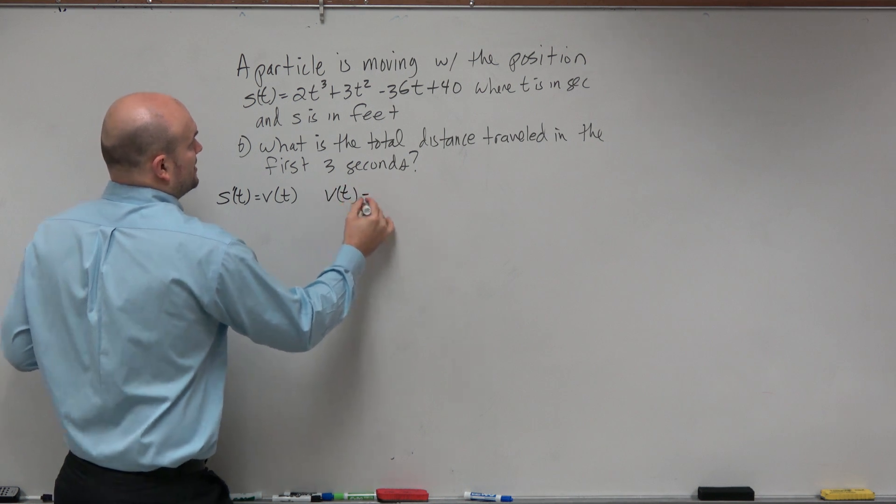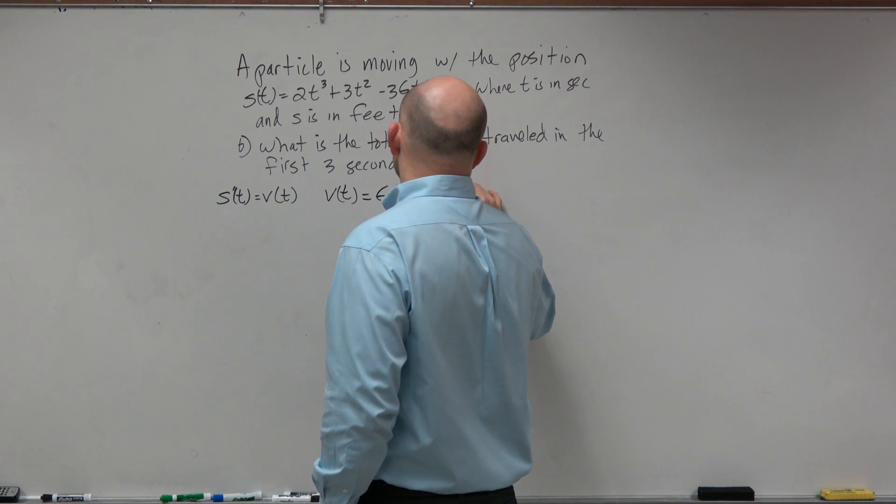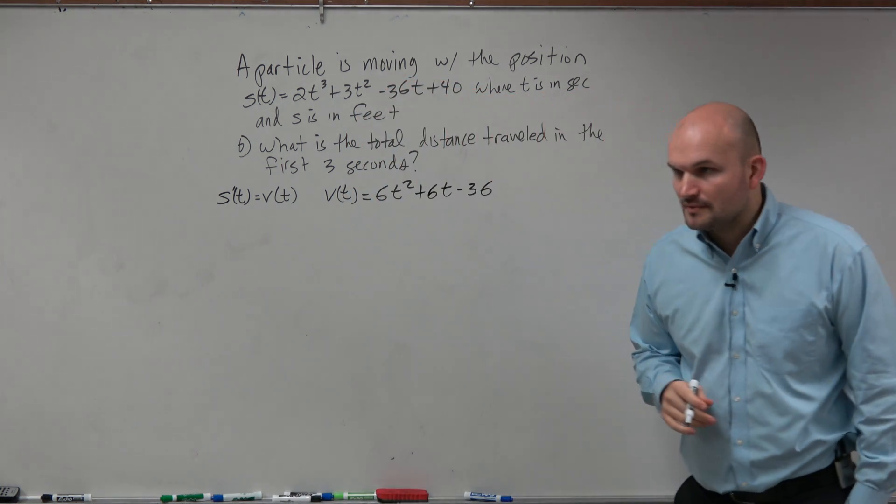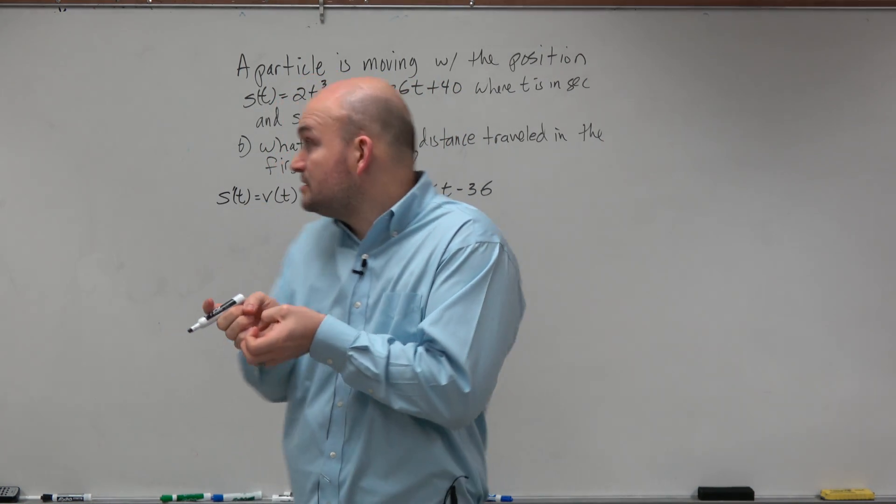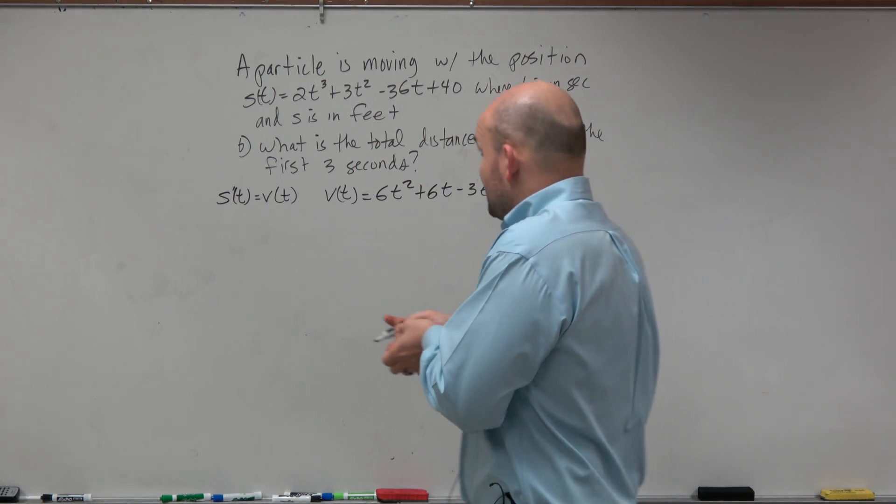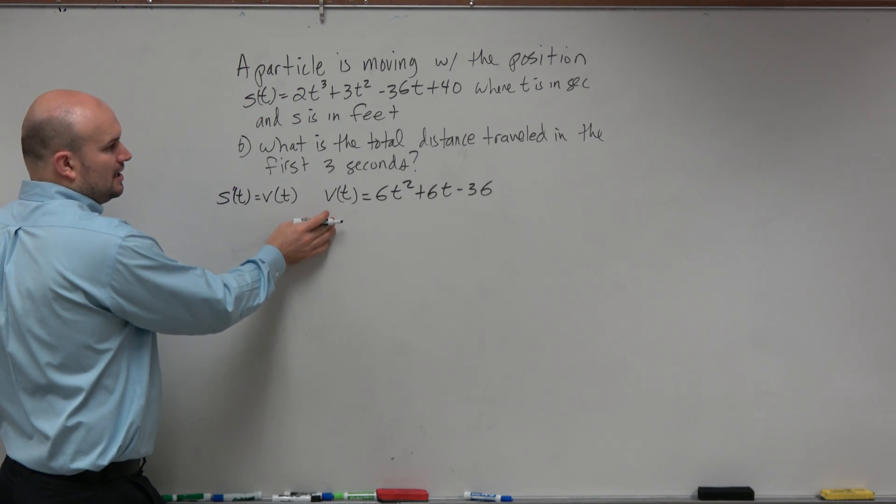So as I kind of already did in my head, that's 6t squared plus 6t minus 36. So what we want to do is we want to find the turning points within the first three seconds.